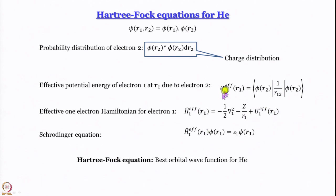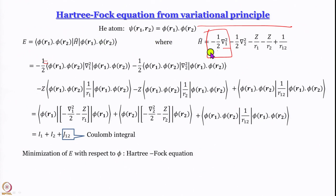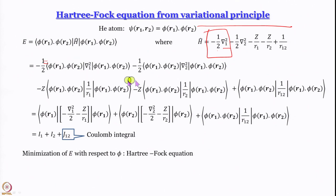The change in this one-electron Hamiltonian is the incorporation of the effective potential energy due to electron-electron repulsion. With that we wrote the Schrödinger equation — called the Hartree-Fock equation. The Hartree-Fock equation is also obtained from the variation principle by defining energy as the expectation value using a wave function that is a product of two orbitals. When we expand it, some double integrals become single integrals; one remains a double integral called j12, the Coulomb integral.